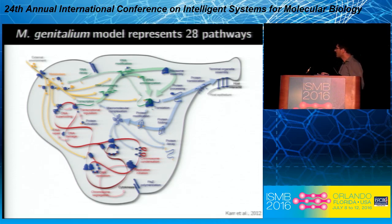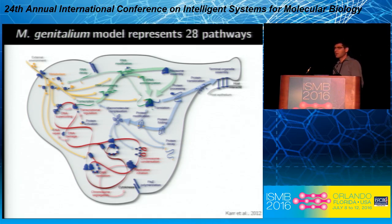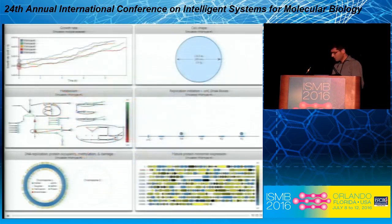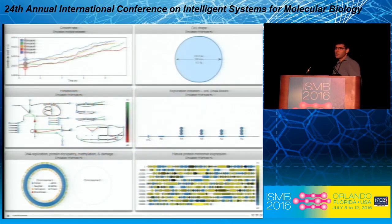We built the model by combining models of 28 pathways, ranging from core pathways like metabolism and transcription to translation, as well as central pathways like DNA damage, DNA repair, and RNA modification. The really cool thing about wholesale models is that you can use them to make a wide range of predictions about the physiology of individual cells.